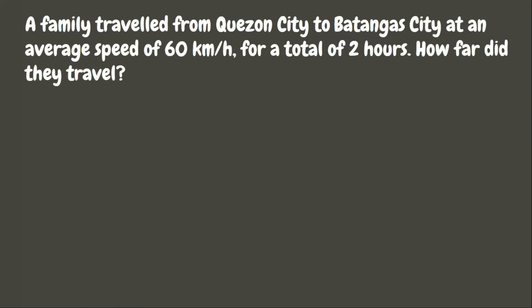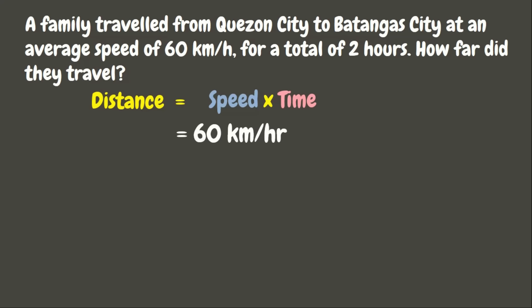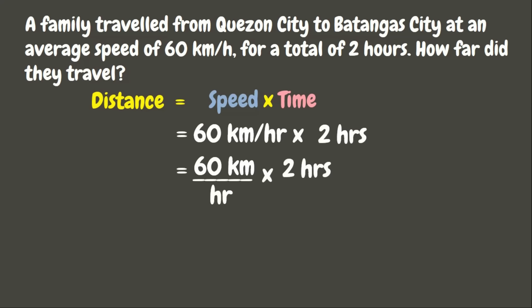Again, to solve for the distance, we need to multiply the speed and the time. Here in our problem, the speed is 60 kilometers per hour, while the time is 2 hours. Now, let us solve. We have 60 times 2, which is 120.